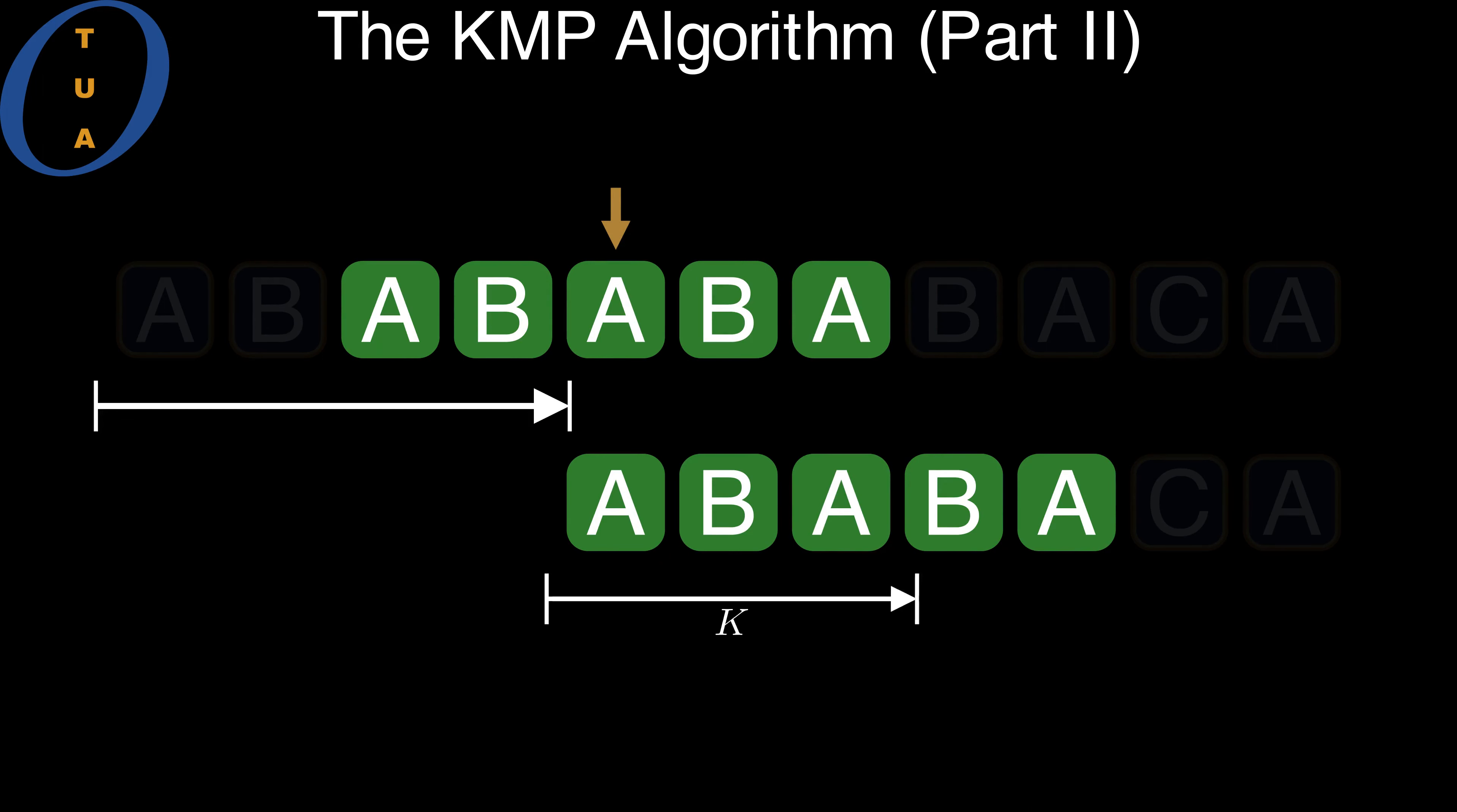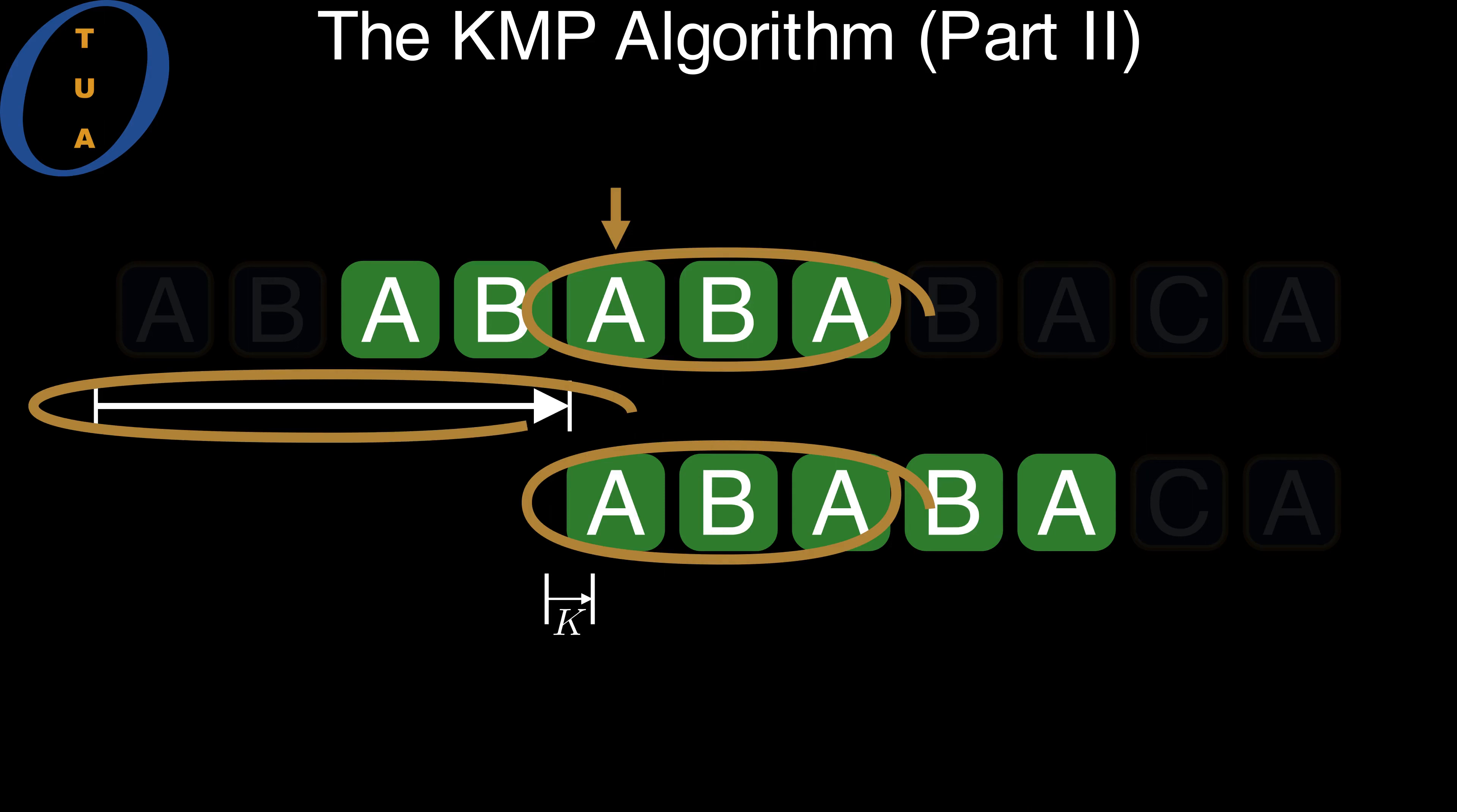We could reset K to zero, as in the naive algorithm, but we can do better. We know that the border in the text matches the border in the pattern, because of how we computed our alignment.